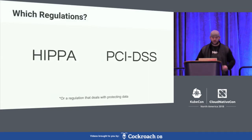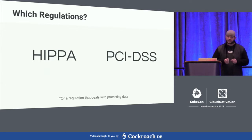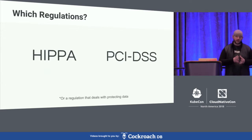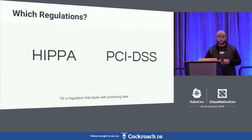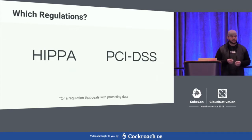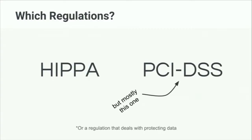Which regulations are we going to be talking about today? Really it's any regulation that deals mostly around data and data protection, which would include HIPAA and PCI DSS. If you're doing a compliance regulation around process or company maturity this doesn't necessarily apply, but if you are doing one around data then the information here will be beneficial. I'm going to be talking mostly around PCI DSS and using the rules and regulations from there.